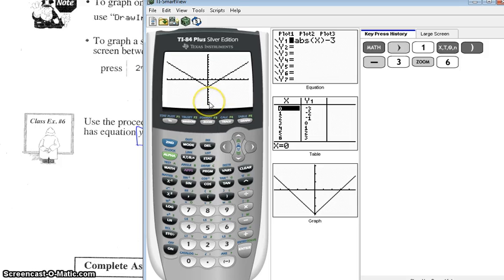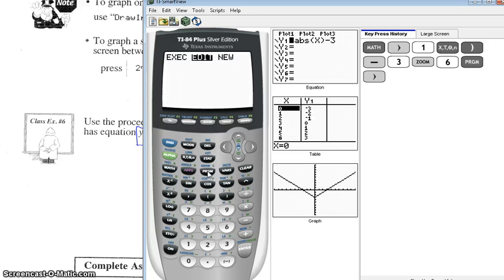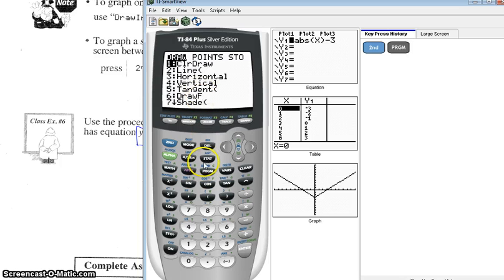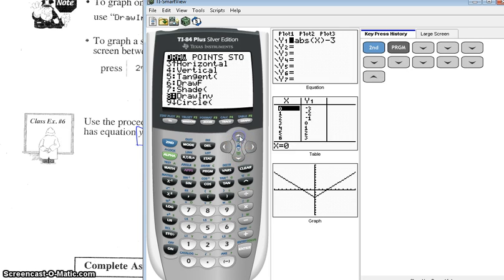Now we want the inverse. There's a couple ways we can do this. From this graphing screen, what we can do is hit program, and go to... Okay, this might not work the way I thought it would. Hang on. Okay, sorry I got that. Second program is what we want. Okay, and that takes us to draw, which makes sense. We want to draw the inverse of that. So let's go down until we see the inverse. There we go, draw inverse, number 8.